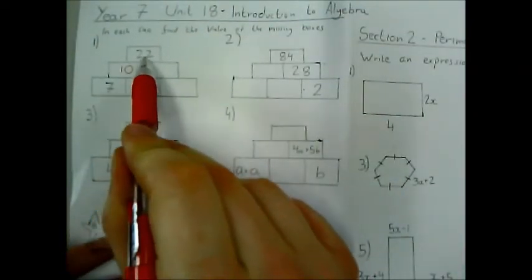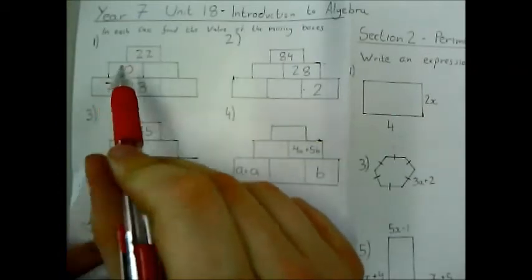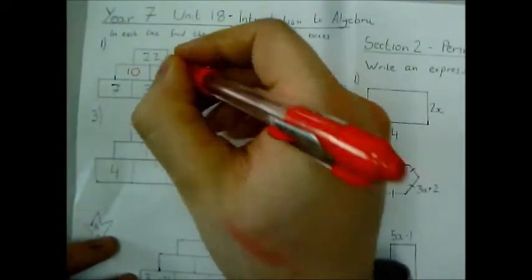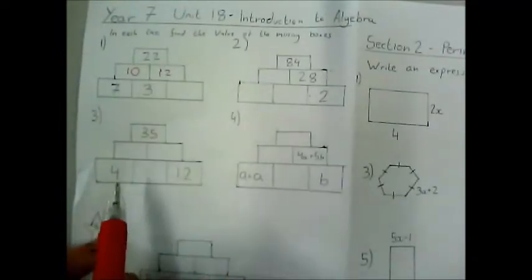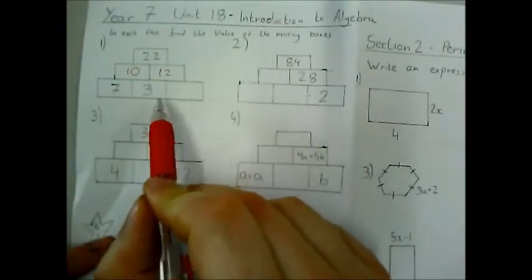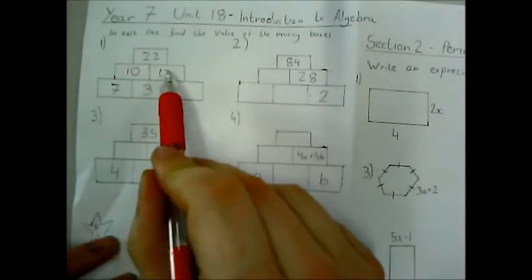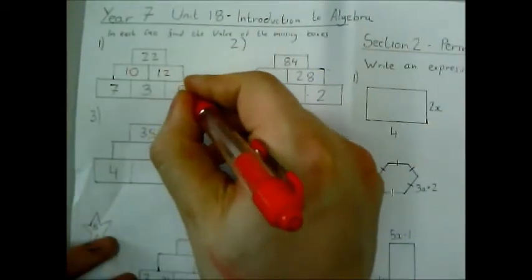And then here, 10 plus a number is 22. So if you do 22 take away 10 to work out that number, you get that is 12. OK, and as you can see, 10 and 12 makes 22. So finally this box here is something plus 3 gives me 12. So that number must be 12 take away 3, so 9.